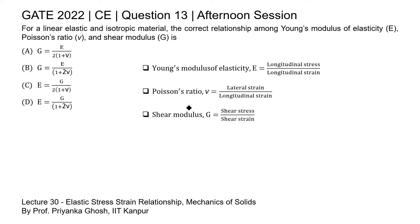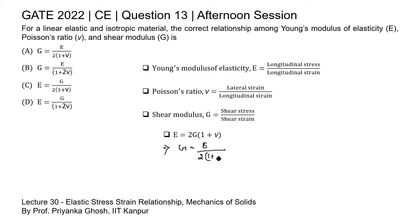If we try to establish the relationship among these constants, we may write E equal to 2G into (1 plus nu). This equation can also be written as G equal to E divided by 2 into (1 plus nu). Looking at the options, the correct relationship is given in option A: G equal to E by 2(1 plus nu).